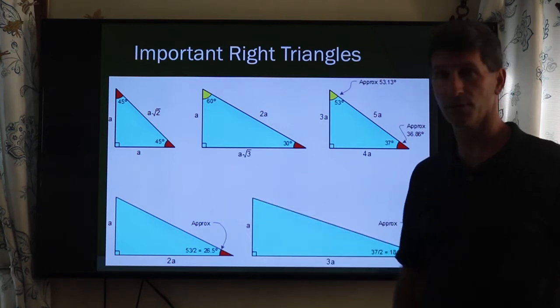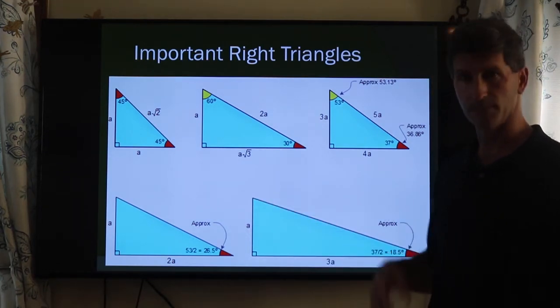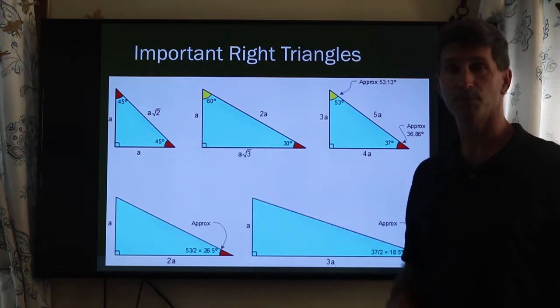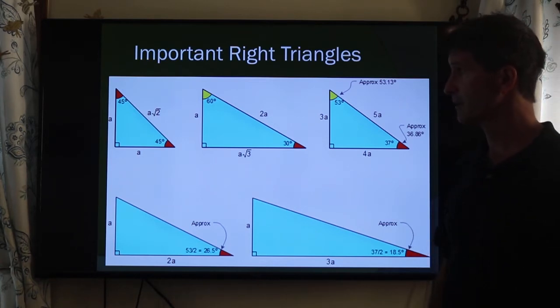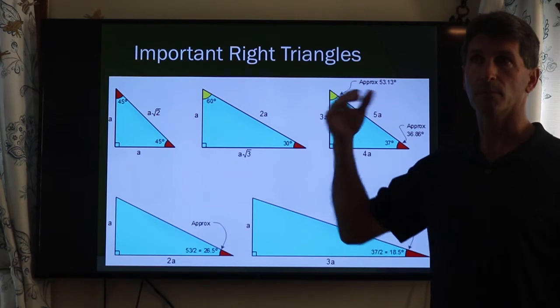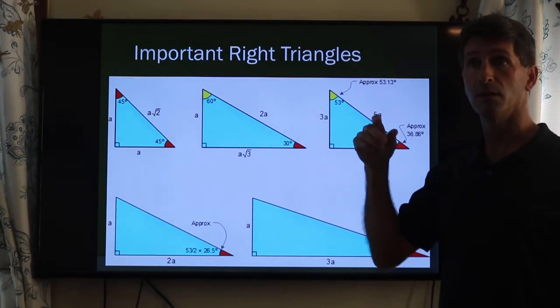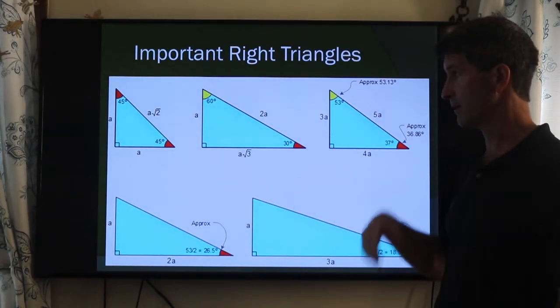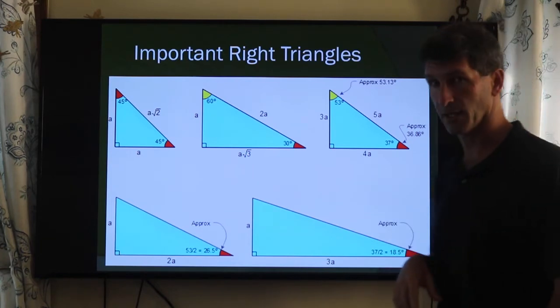The isosceles right triangle has two 45 degree angles. You know, of course, if you do the Pythagorean theorem, you find out that the hypotenuse is the square root of two times each of the lengths of the sides. Basically here, c squared is equal to a squared plus a squared, which is 2a squared. You take the square root of both sides, and you get that c is equal to a times the square root of two.